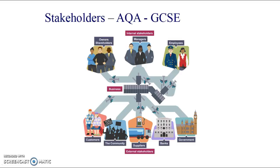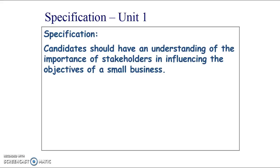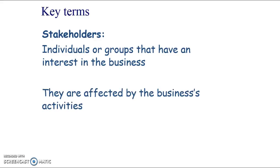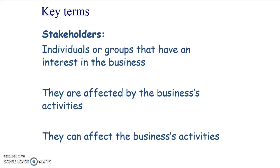This is a nice diagram looking at an airport and the different internal and external stakeholders who are influenced by the business and also who can influence the business. We're going to look at stakeholders for different businesses. You need to understand the importance of stakeholders in influencing the objectives of a small business. Stakeholders are any individuals or groups that have an interest in the business — they are affected by the business's activities and decisions, but they can also affect the business's activities, objectives, and success.